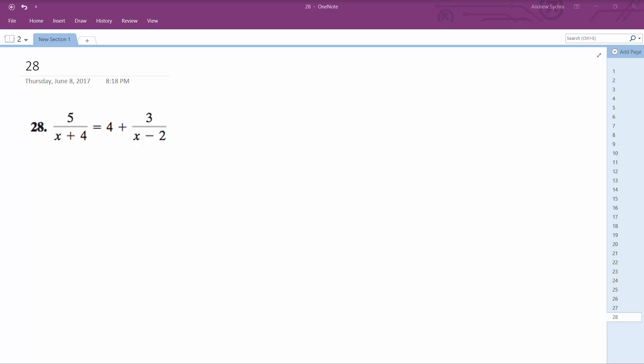Alright, we want to solve this problem. What we're going to do is find the common denominator, which is x plus 4 and then x minus 2. That's what we need, the least common denominator, so it's going to be 5 times x